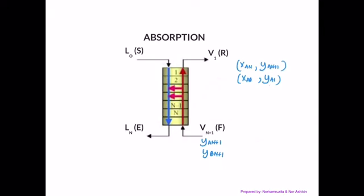In the neighboring stream, the extract stream that we have, so the extract majority consists of the solute, which is x_an.